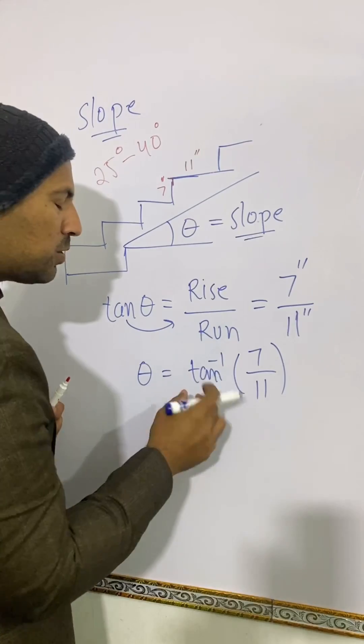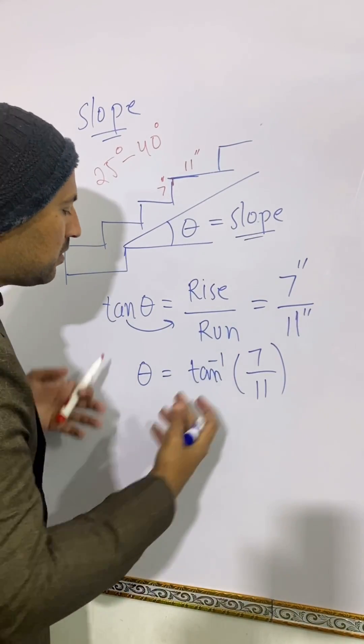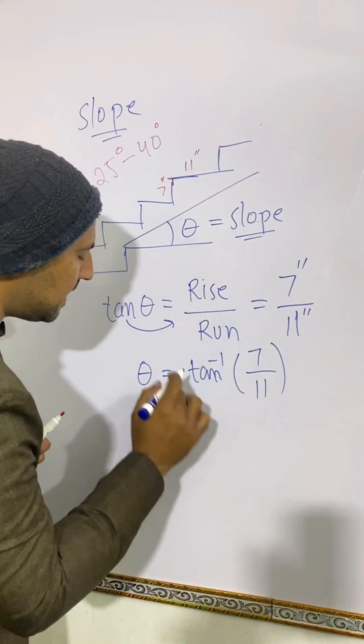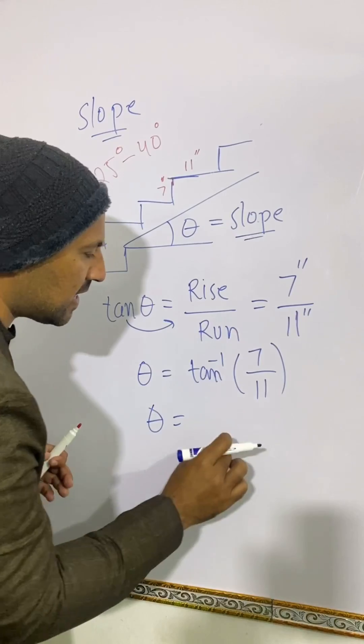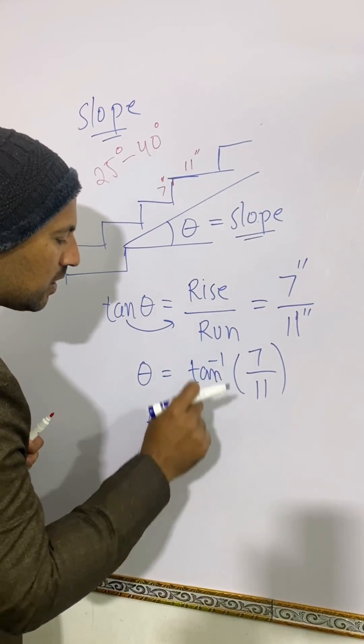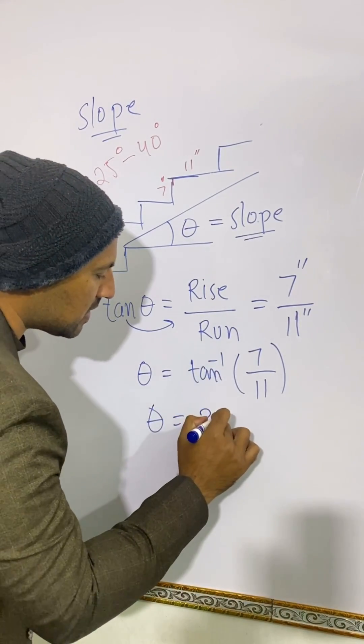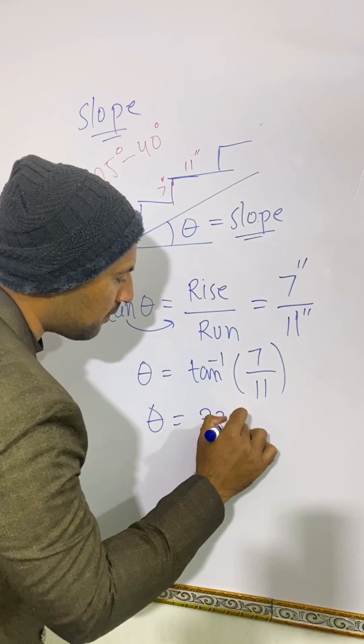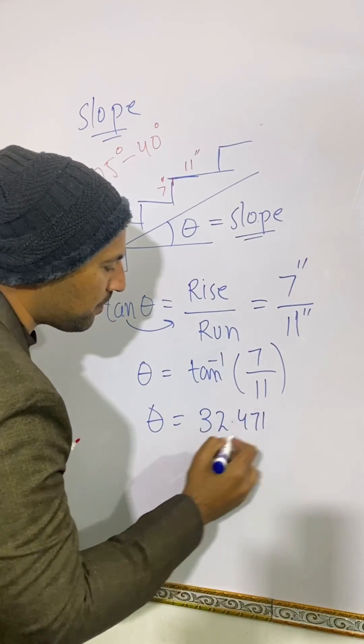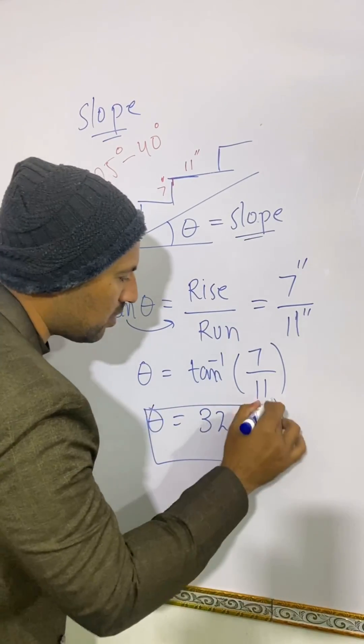Now just use your calculator. Theta is the tangent inverse of 7 by 11, which equals 32.471 degrees.